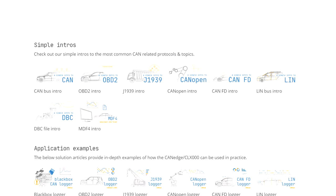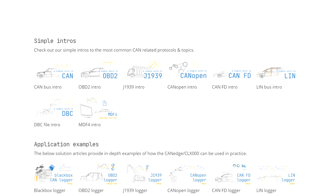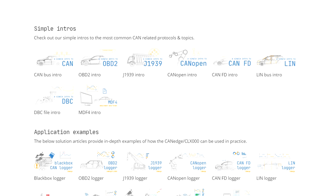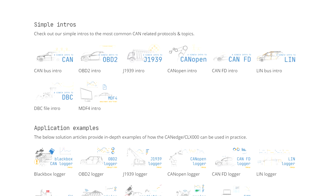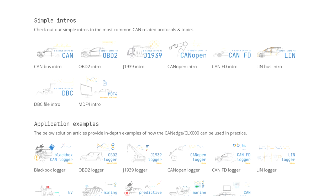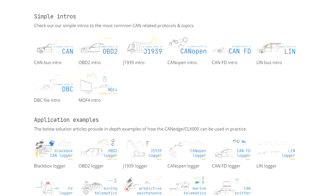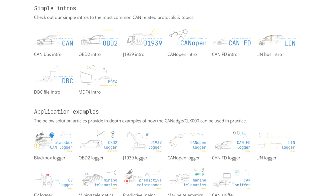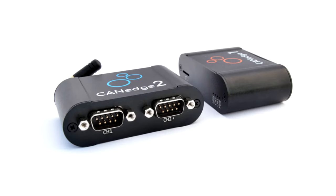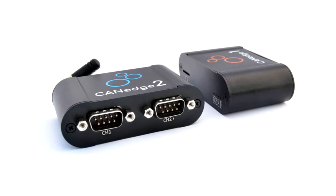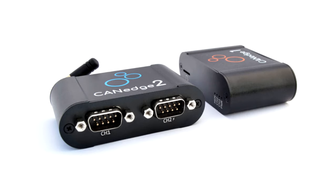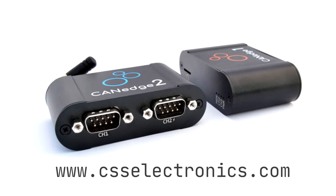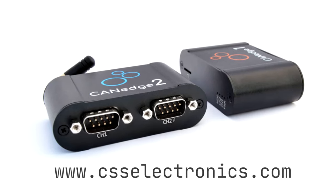Finally, we also recommend checking out our other simple tutorials, including our intros to CAN bus, OBD2, CANopen, CAN FD, LIN bus, and more. You can also try setting up your own J1939 dashboards — see our description for links. If you liked this video, please share and subscribe. And if you have questions, contact us.